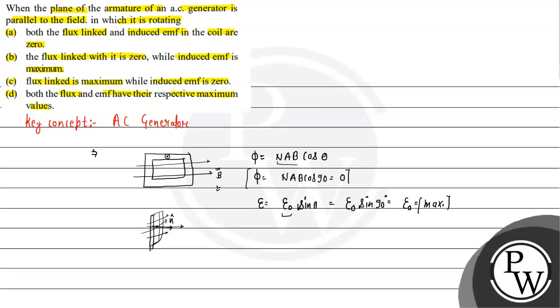So this will be the answer of this question. Option B is given: flux linked is zero, while induced EMF is maximum. Option B is the correct answer of this question. I hope you all understood this concept. All the best and thank you so much.